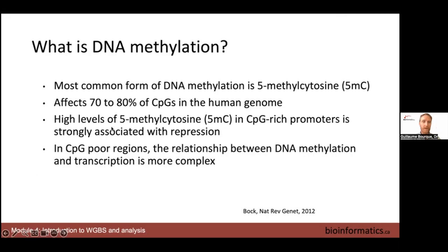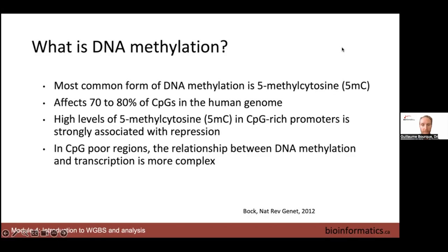So, what is DNA methylation? In the ChIP-seq practical and lecture you were already talking about different types of methylation. Here we're going to focus on DNA methylation — in particular on 5-methylcytosine (5mC). This type of methylation affects between 70 and 80 percent of CpGs in the human genome. A high level of 5mC in CpG-rich promoters is associated with repression, and there's still lots to be learned about what's happening outside these promoters and in CpG-poor regions.